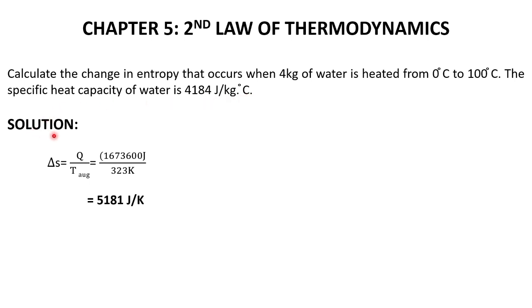Here is the solution. Change in entropy, ΔS, equals Q over T_avg. We're going to substitute the values: 1,673,600 divided by 323 K. So our answer is 5181 J/K.